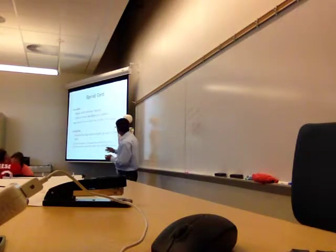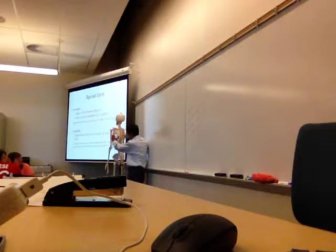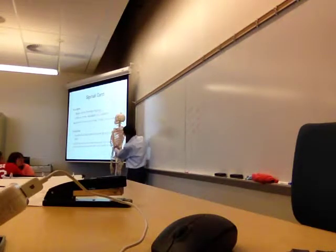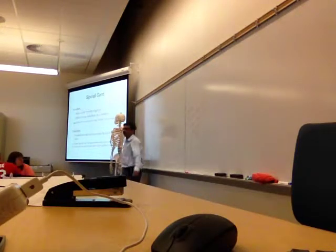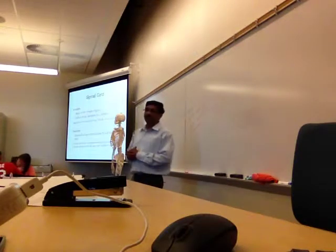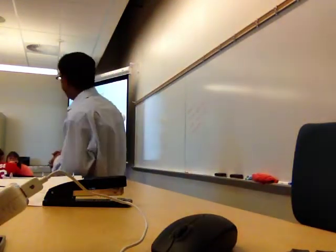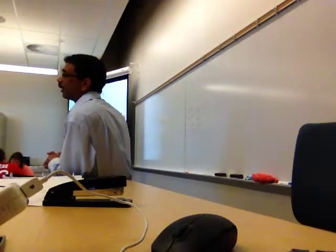The spinal cord starts at the foramen magnum. The upper end is at the foramen magnum and then goes all the way down to lumbar one vertebra. So basically, the spinal cord starts at the foramen magnum and ends at L1. The extent of the spinal cord: the length is about 18 inches, or 45 centimeters long. The width is half an inch, or 14 millimeters. I may ask where the spinal cord ends or starts, and what its length is.